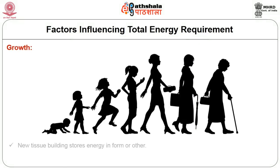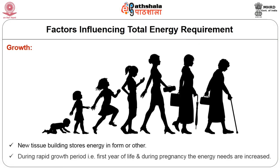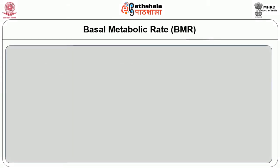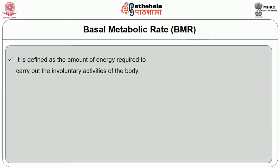Growth: new tissue building stores energy in one form or another. During rapid growth periods — the first year of life and during pregnancy — energy needs are increased. Basal metabolic rate (BMR) is defined as the amount of energy required to carry out the involuntary activities of the body. It includes the functional activities of organs like heart, liver, kidney, lungs, brain, secretory activities of glands, peristaltic movements of the GI tract, maintenance of body temperature, muscle tone, etc.